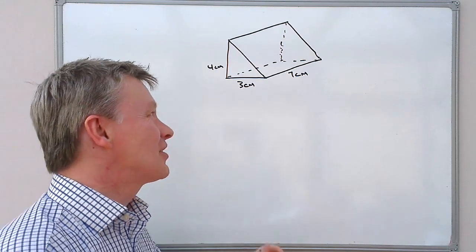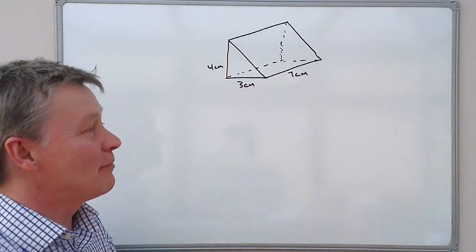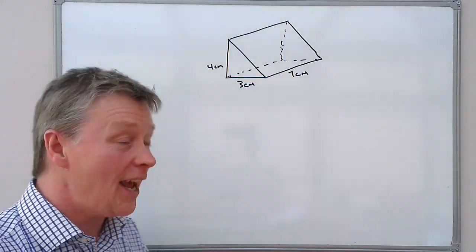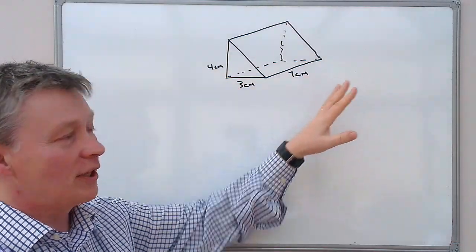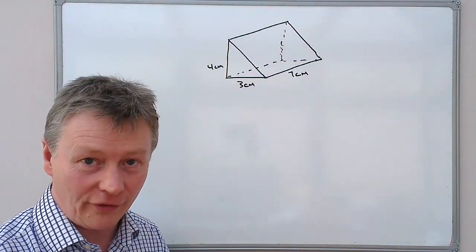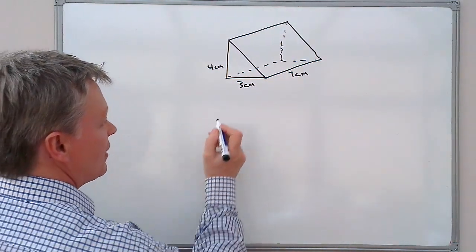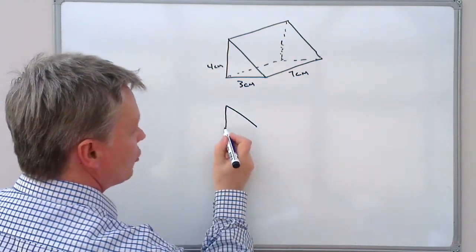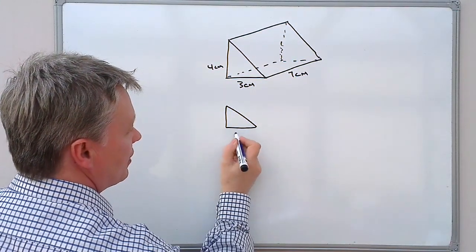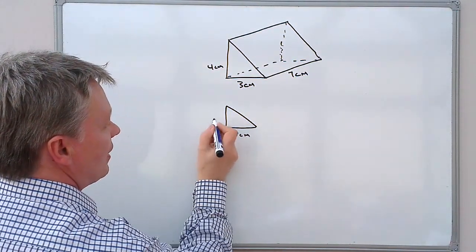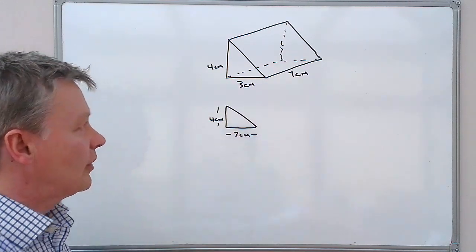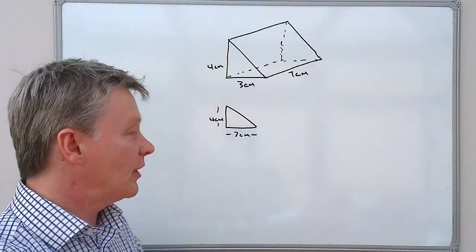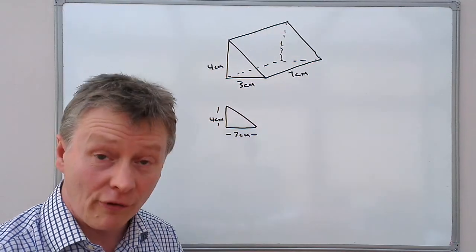So what we're going to do with this triangular prism is firstly we're going to work out the area of the triangle at the side and then we're going to multiply it by the overall length. So the first thing is if we look at the area of the triangle first. Now this is three centimetres and this is four centimetres. If you have a look at the website you'll be able to see how we calculate the area of triangles.